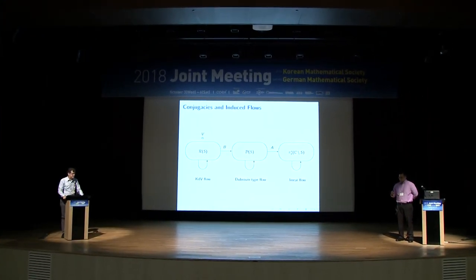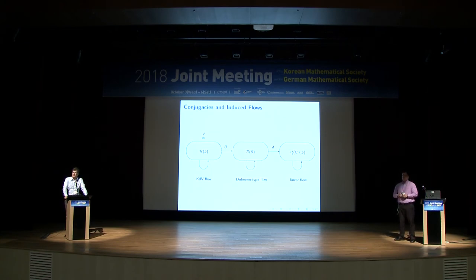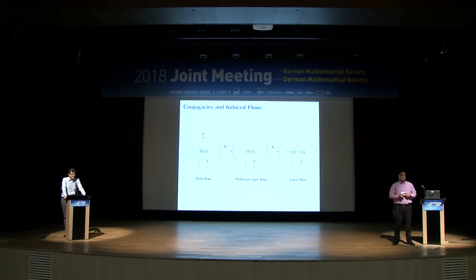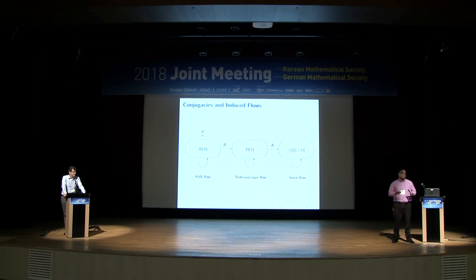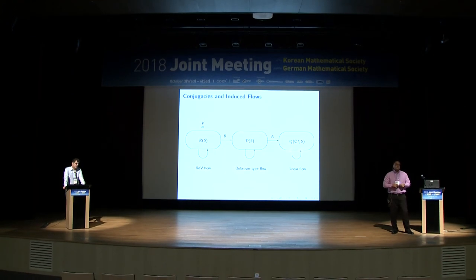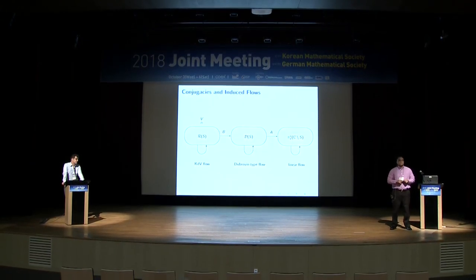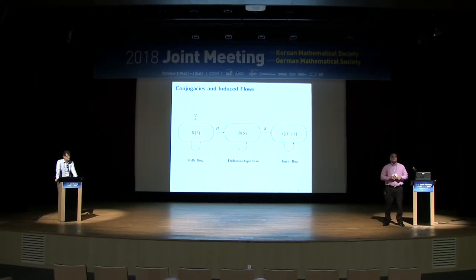Thank you very much for sharing your perspective on the Deift conjecture with so much energy and perfect time planning. Are there questions or comments? So if I'm not mistaken, the isospectral structure can be traced back to a countable set of invariants generating the Virasoro algebra, and this countable set of invariants has some resemblance to your torus. Is there a possibility of a conformal structure in the picture that would explain the special nature of these solutions?